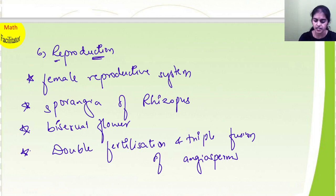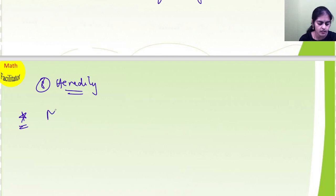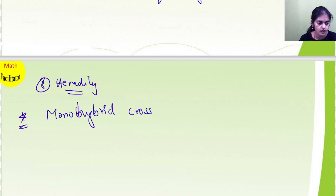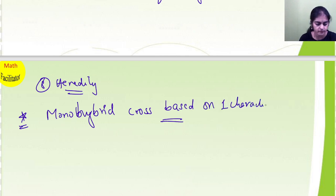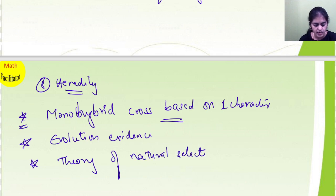These are the important questions of reproduction. Then from heredity and evolution, you will learn monohybrid cross based on any one character. Also please learn evolution's evidence with examples, and also learn the theory of natural selection — Darwin's theory. These are the very important questions from the heredity chapter.